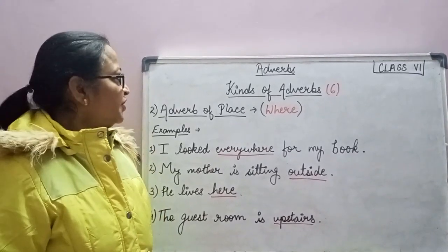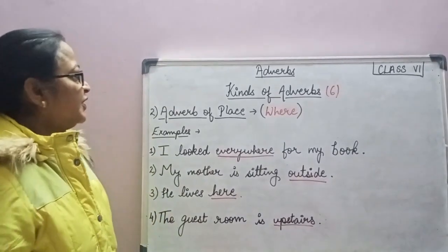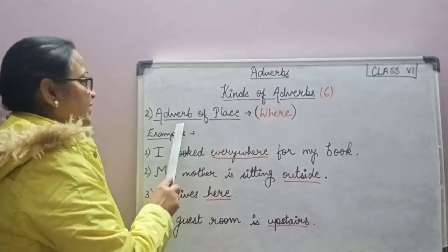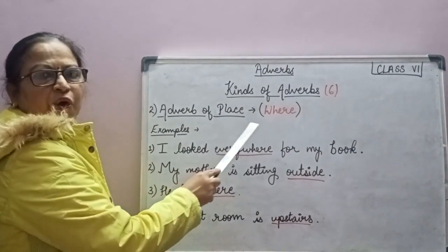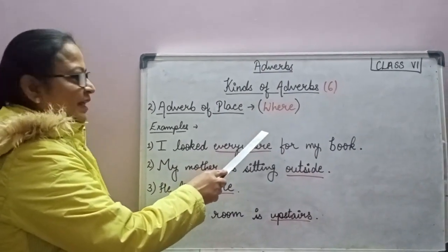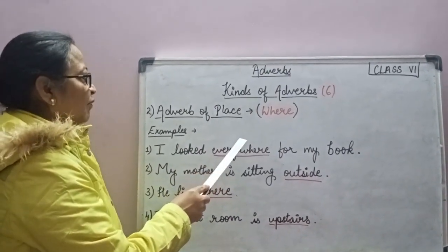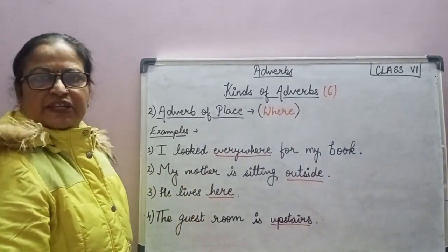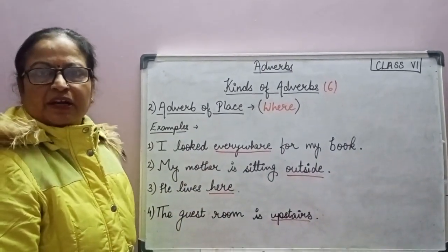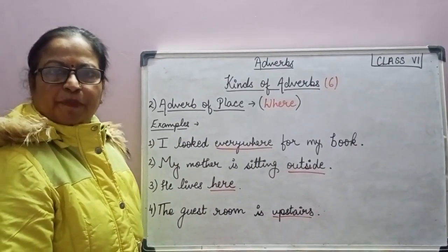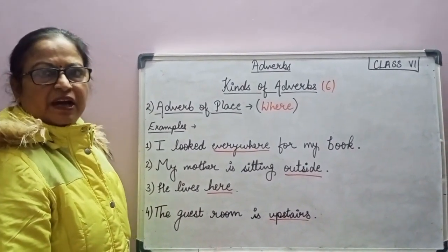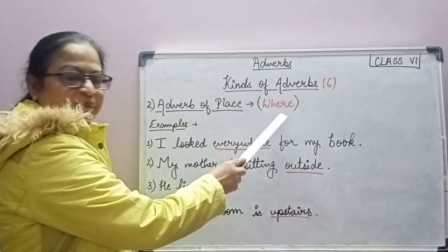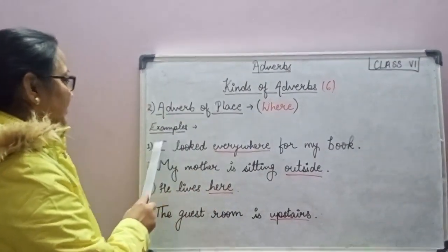Hello friends, in continuation of kinds of adverbs, today we will discuss adverb of place. Adverb of place describes where the action occurred or is performed. It answers the question 'where.' Let's see some examples.